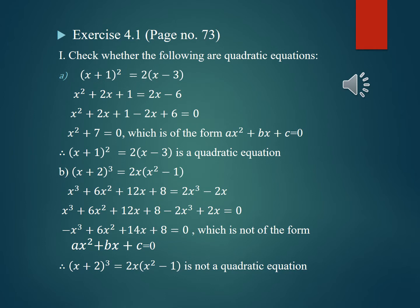Now let us check whether given equations are quadratic equations or not. For this we simplify the given equation and check whether it is an equation of degree 2 or not. Let us see exercise 4.1, page number 73. Two questions are done for you and you have to do the remaining questions. First one: check whether the following are quadratic equations — (x + 1)² = 2(x - 3).